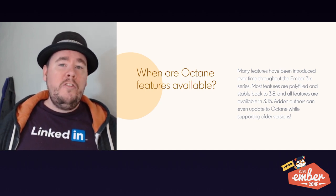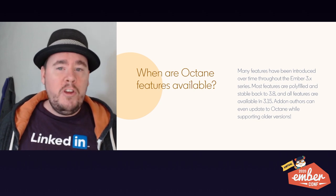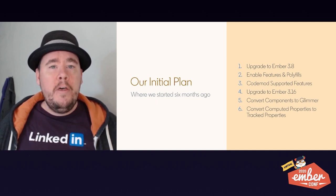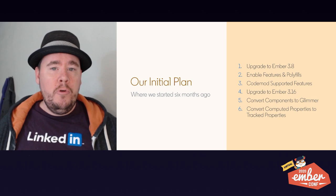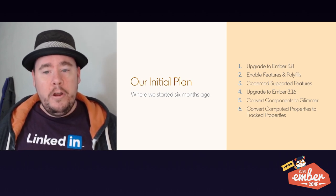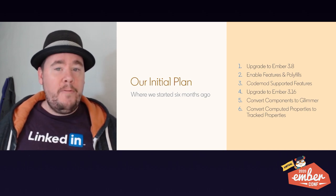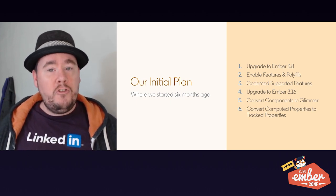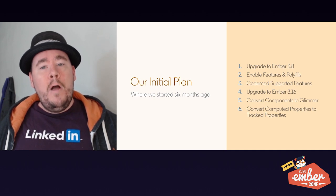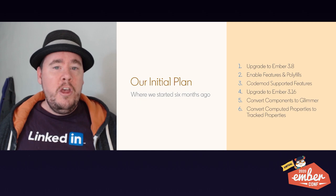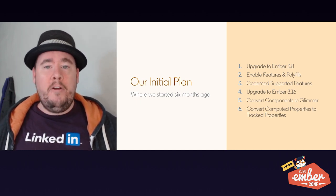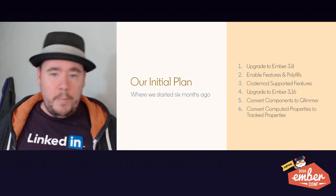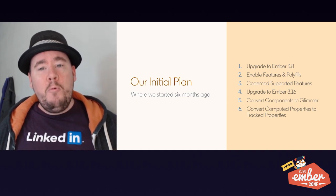For us, we started about six months ago. At that time, Ember 3.12 was the latest, and we had to figure out what we were going to do to get to the Octane standard. We decided that coming from Ember 3.5 at the time, we were going to upgrade to Ember 3.8 and take the approach of trying to adopt polyfills so that we could get features sooner. That would allow us to start using these features in our production code as we were finishing the rest of the migration to Ember 3.16, getting all of our components converted to Glimmer and so on.